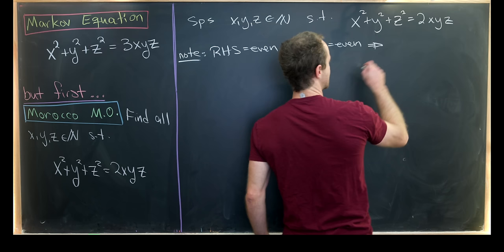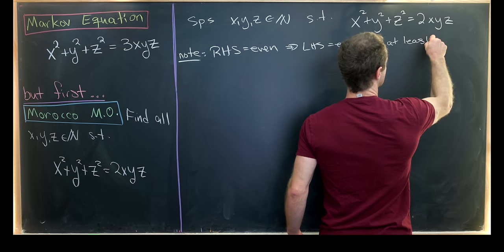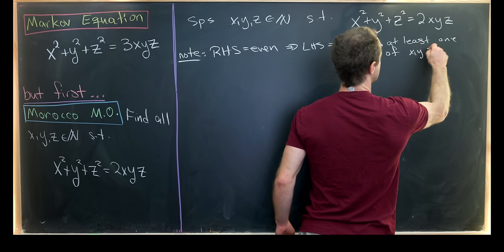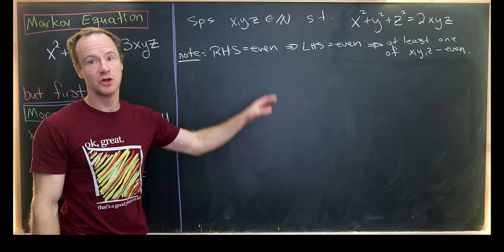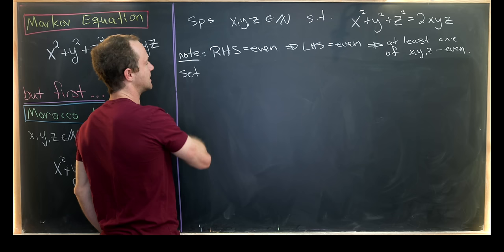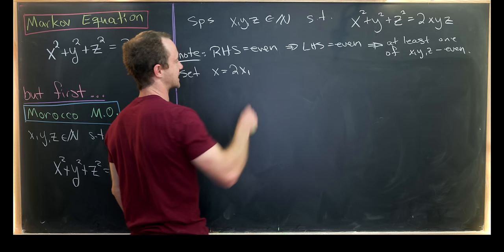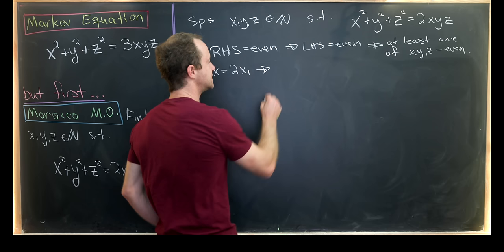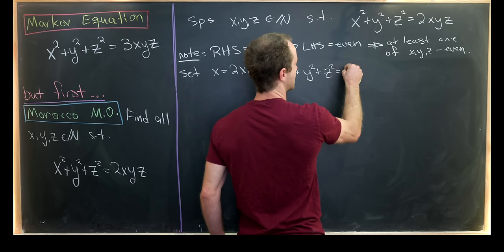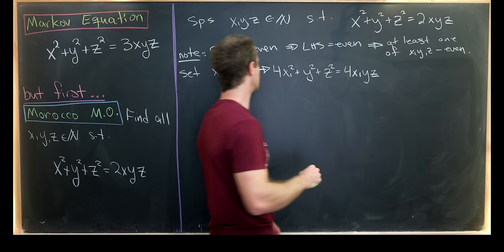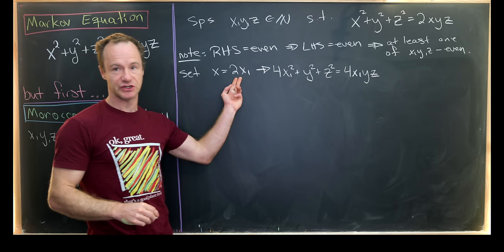But we actually don't need all of that structure. All we need is the fact that one of them is even. So at least one of x, y, z is even. And now since x, y, and z are playing symmetric roles in our original equation, we know that at least one of them is even. We might as well set x equal to the even one. So let's do that. Let's set x equal to two times x₁, and then plug that into our original equation. So that'll give us 4x₁² + y² + z² = 4x₁yz.